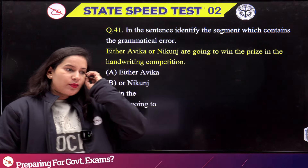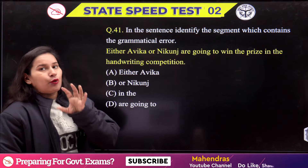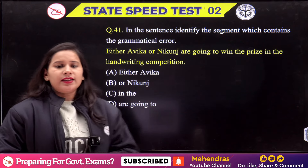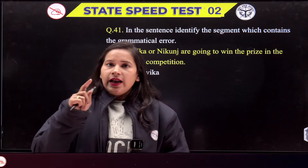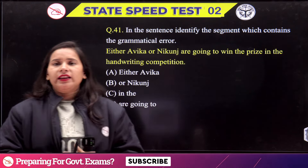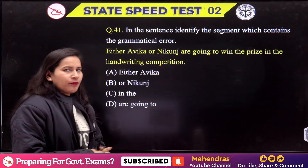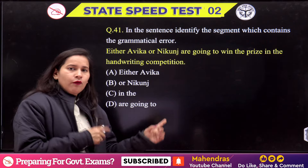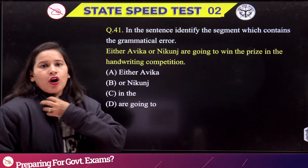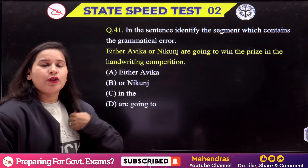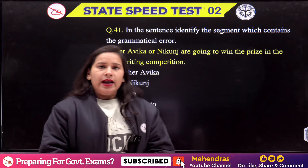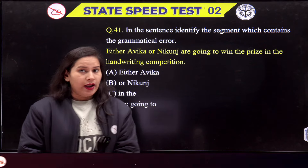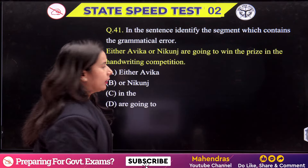In the state's speed test, if you get English questions, there are 10 questions. If you have already given the speed test — ST number 2 — you will do the analysis. Those who have not given it will learn. Because if you give the ST without proper analysis, somewhere we are going to fall short.